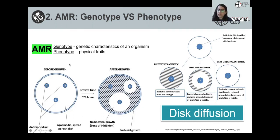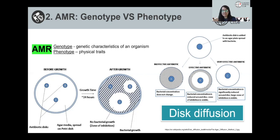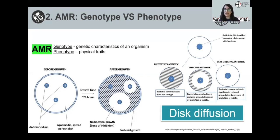In short, the AMR genes do not always lead to the bacteria exhibiting resistant behaviour — which we also call phenotypic behaviour. Therefore, we have to both look at the DNA sequence, or genotype, and test it in the lab to see the phenotype. There are multiple methods of testing this, which we can go into in future sessions.